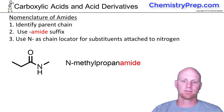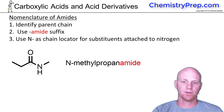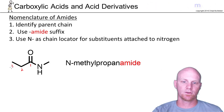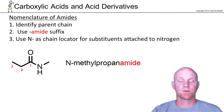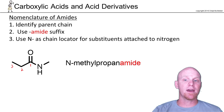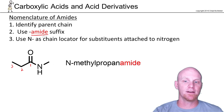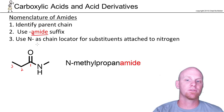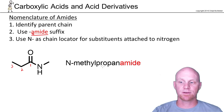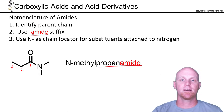Now we move on to amides. In this case your carbonyl carbon is still carbon number one. So here we've got a three-carbon amide, so we call that propane, and then we'll add the suffix amide. Being that amide starts with a vowel sound, we'll drop the E in propane and simply say propanamide.